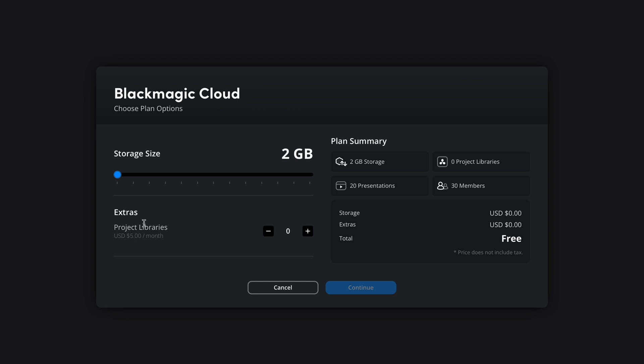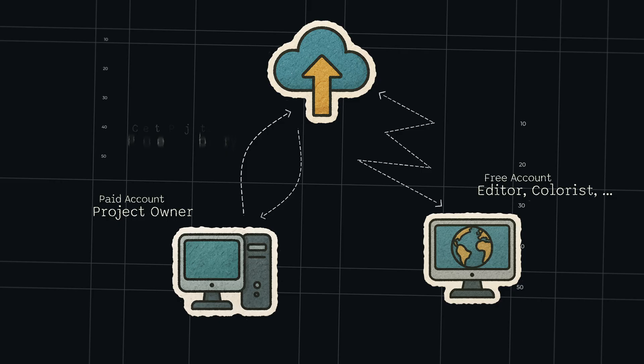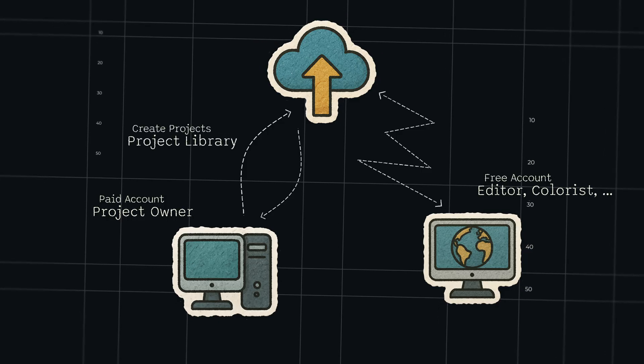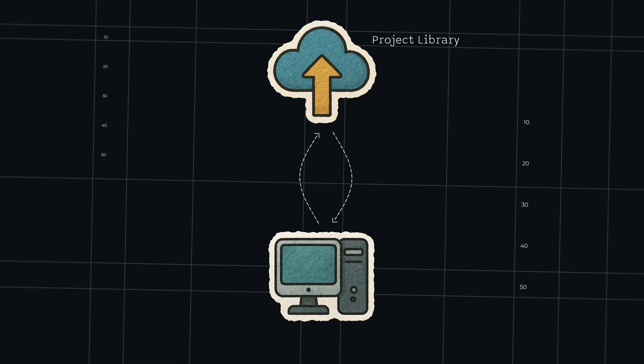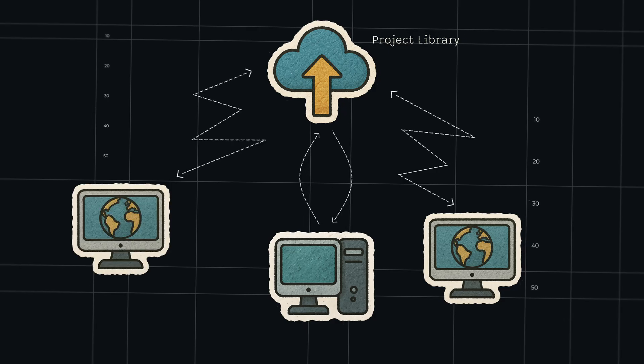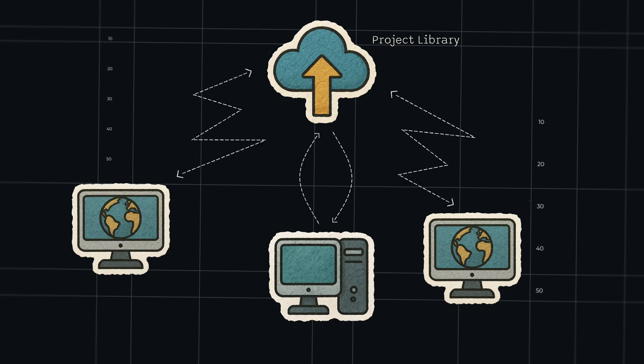There are a few upgrade options depending on what you want and need. The cheapest option is to just add one project library to your free plan — that's five bucks a month. A project library is what you need to create projects, and one project library allows you to create as many projects as you want in the cloud.